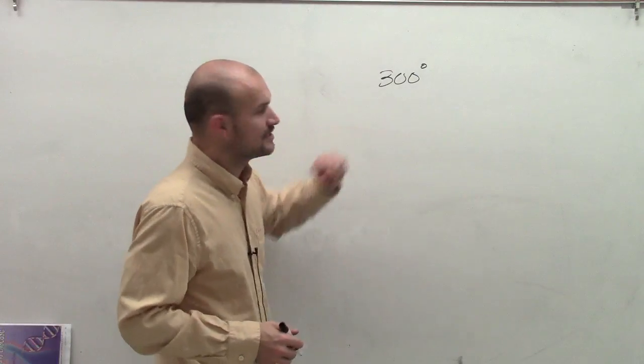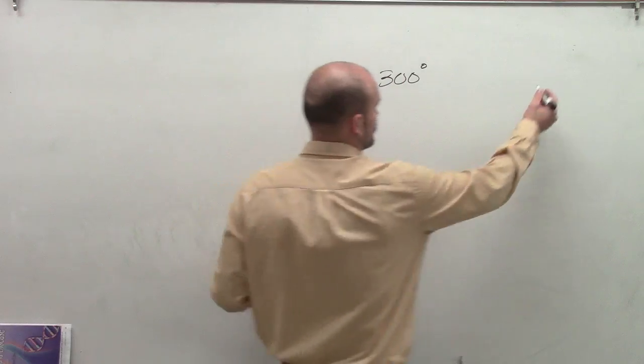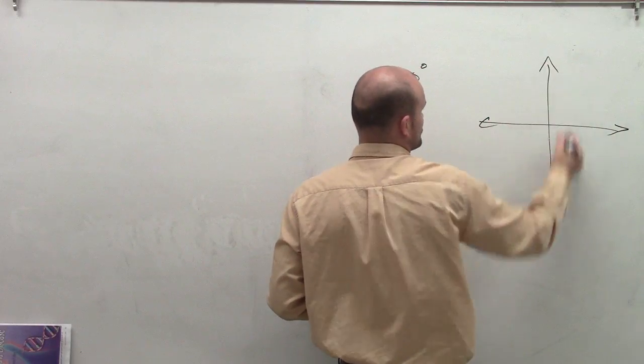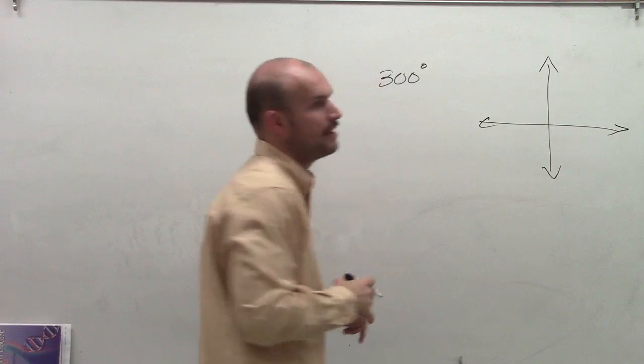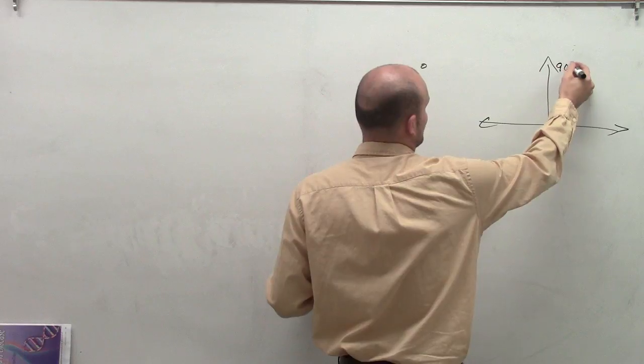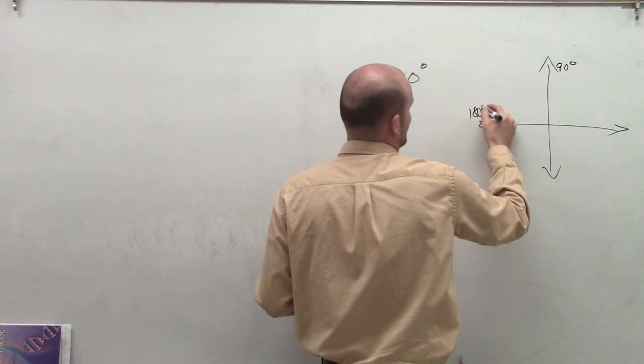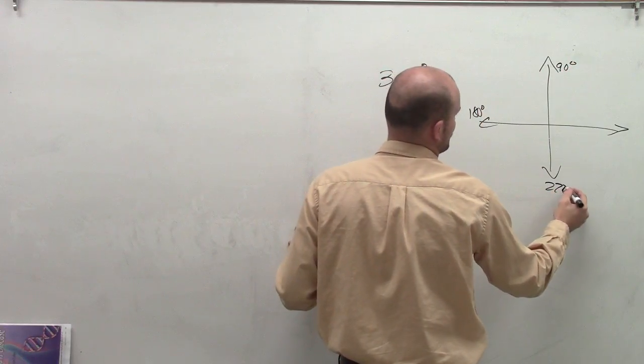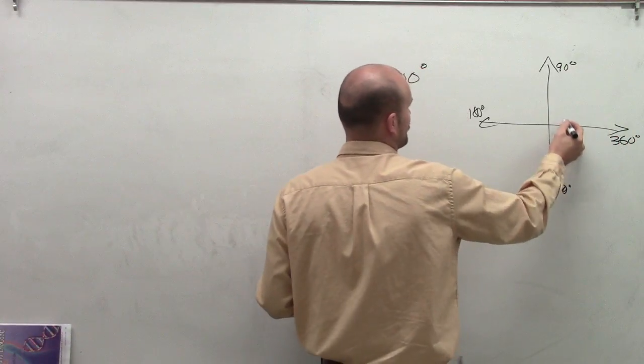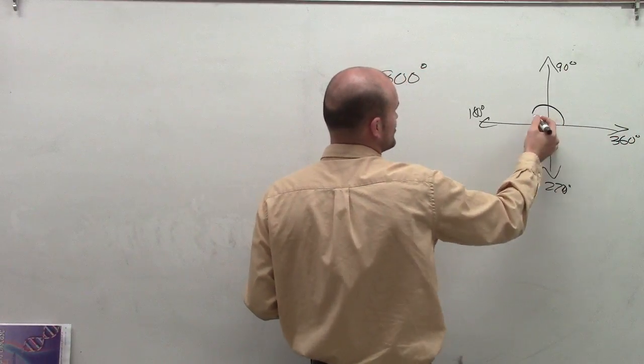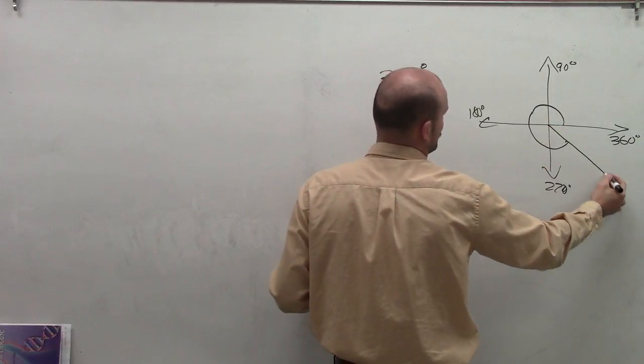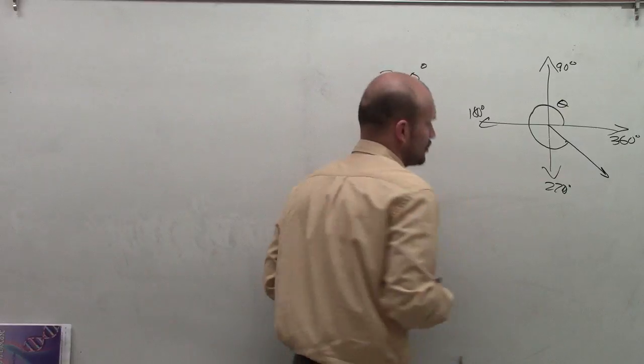So the first thing I need to do is determine where 300 degrees is. I'll just draw a quadrant here. Remember, this is going to be an angle in standard form, where we're going to have our initial side here. So if we had 90 degrees, 180 degrees, 270 degrees, and then we have 360 degrees. So if I'm drawing my angle 300 degrees in the counterclockwise direction, it's probably going to give me an angle roughly right around here. So I know that's going to be in the fourth quadrant.